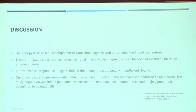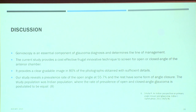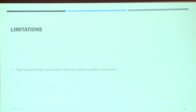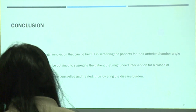Gonioscopy is an essential component of glaucoma diagnosis and determines the line of management. The current study provides a cost-effective, frugal, innovative, slit-lamp-independent method to classify open or closed angle that can be deployed at the grassroots level. It provides a clear, gradable image in 80% of photographs obtained, with sufficient detail to classify the angles. Our study reveals a prevalence rate of 55% open and 45% closed angle, which is consistent with the Indian population. The study limitation is that it is a flash-based diffuse illumination and not a minimal illumination technique.